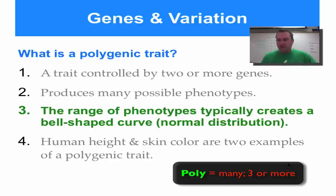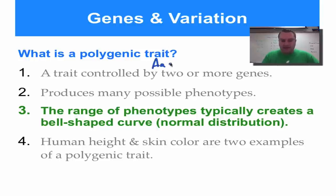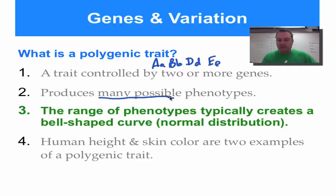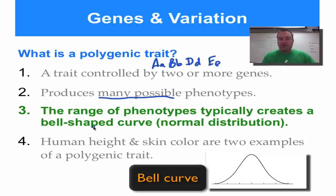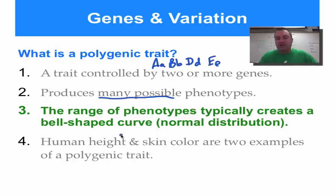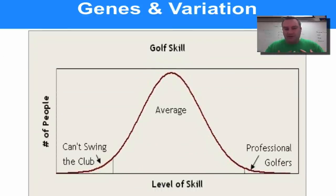Polygenic traits are traits controlled by two or more different gene pairs. For example, coat color might require gene pairs A, B, D, and E all working together to show the phenotype. When you have this situation you have many possible phenotypes, which creates a bell-shaped curve — a normal distribution. Human height and skin color are two classic examples of polygenic traits; in fact, a large number of human traits are polygenic.